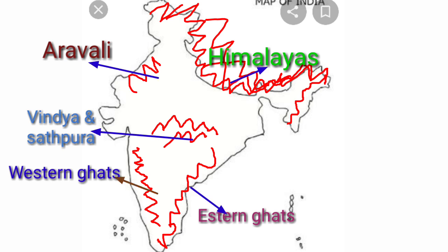The Himalayas — there are three mountain ranges: Himadri, Himachal, and Shivalik.